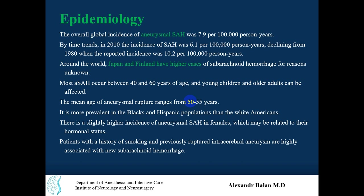Most subarachnoid hemorrhages occur between ages 40 to 60, though young children and older adults can also be affected. In the USA, it is more prevalent in Black and Hispanic populations than in white Americans. There is a slightly higher incidence of aneurysmal subarachnoid hemorrhage in females.